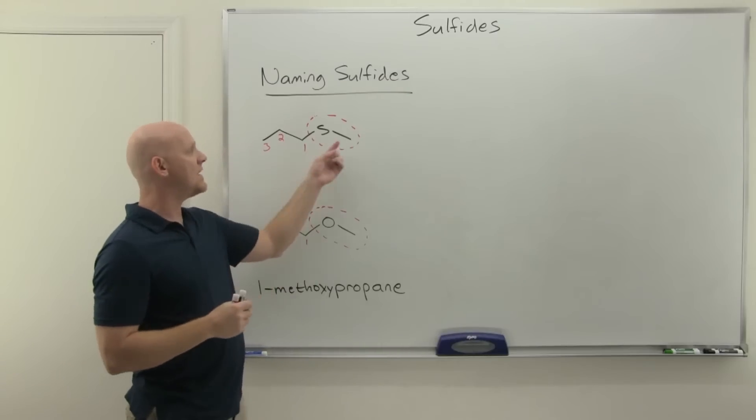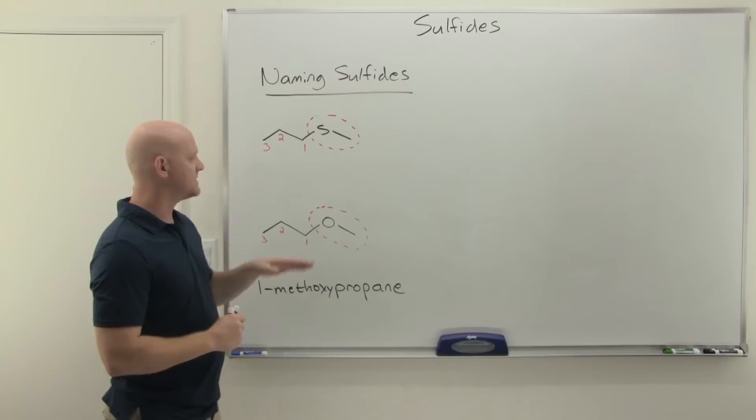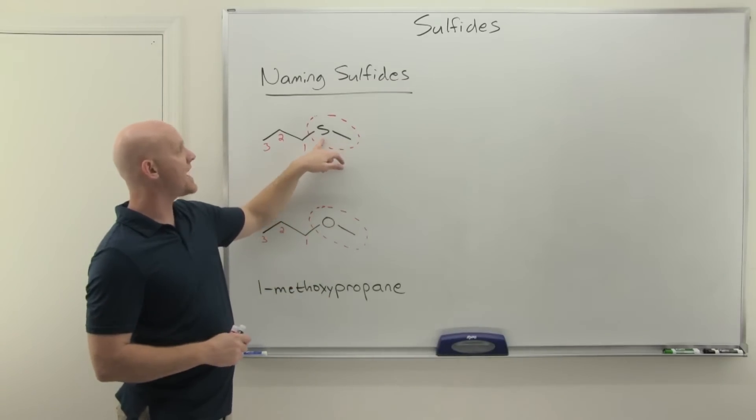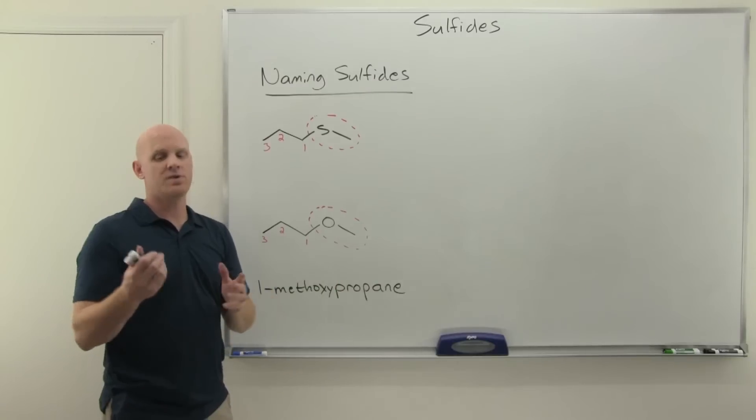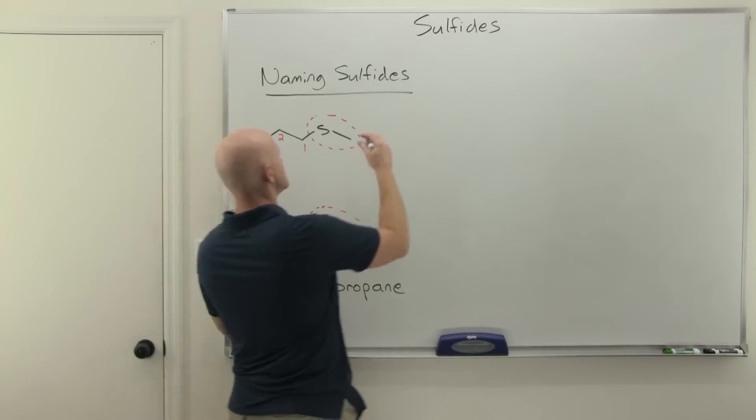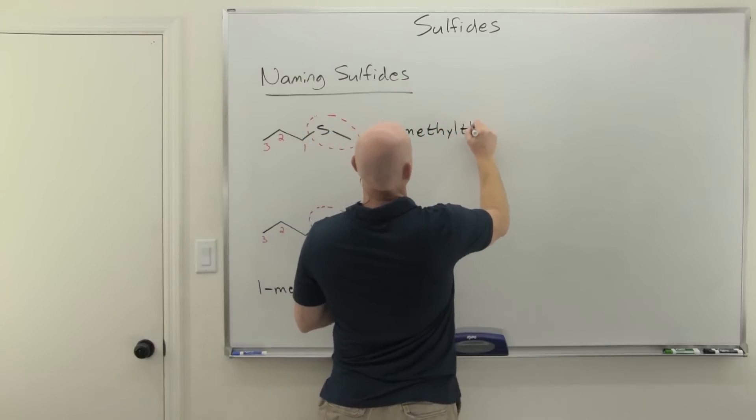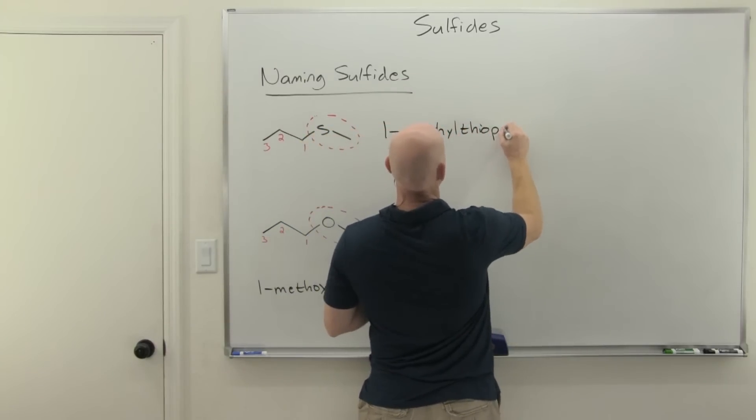And in this case, you'll just say alkylthio, again, thio for sulfur. And so instead of methyl oxy, which gets shortened to methoxy, here will just be methylthio, no shortening of it at all. And so in this case, this will just be named as a substituent. So this is one methylthiopropane.